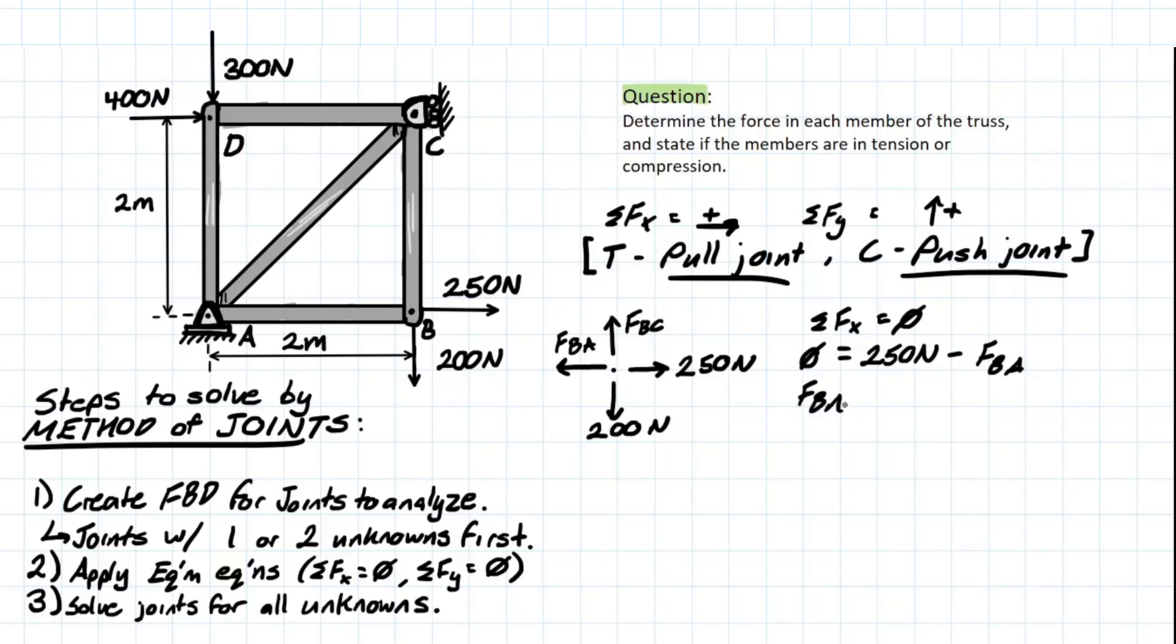Now back to the actual problem solving. I have found FBA to be 250 newtons and based on the convention we have decided previously, we are pulling away from that joint. So we're going to have tension here. Now we can solve for Fy. We have 200 newtons going downward and then we have FBC going up. FBC is going to equal 200 newtons, and it's going to be in tension as well.